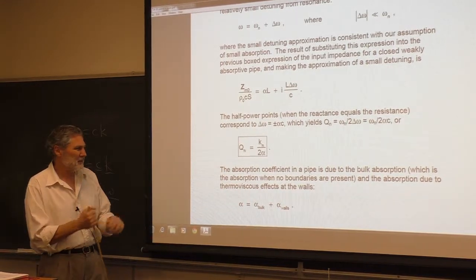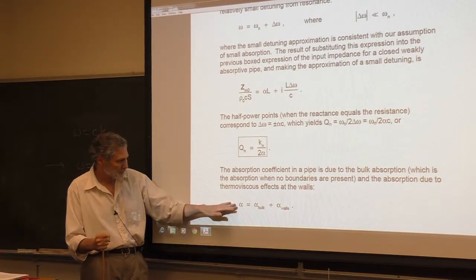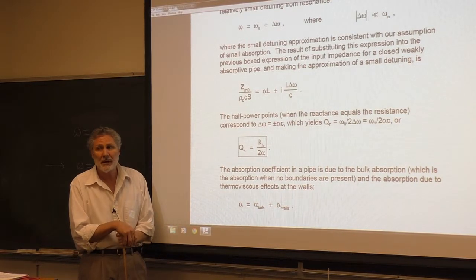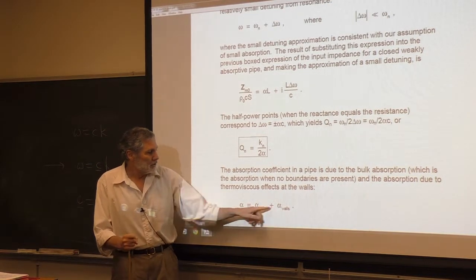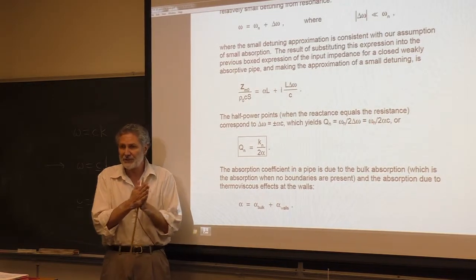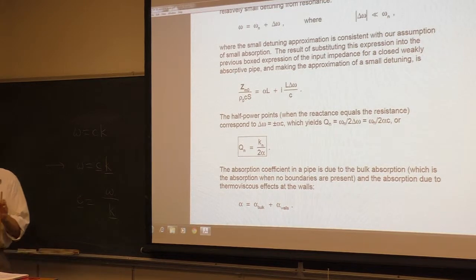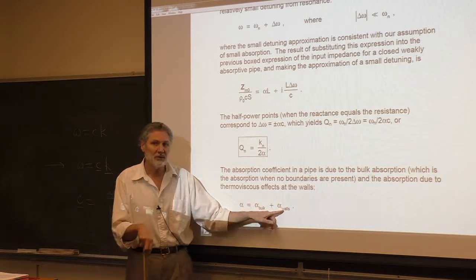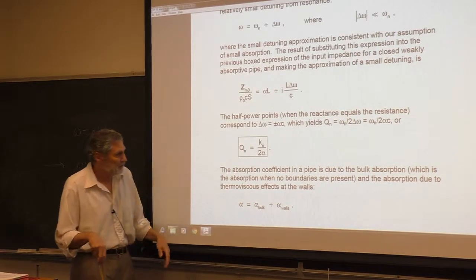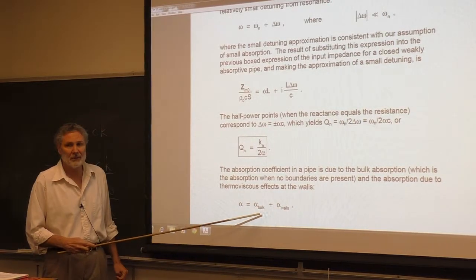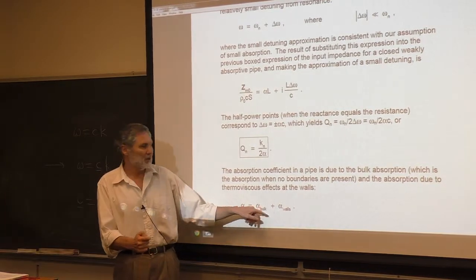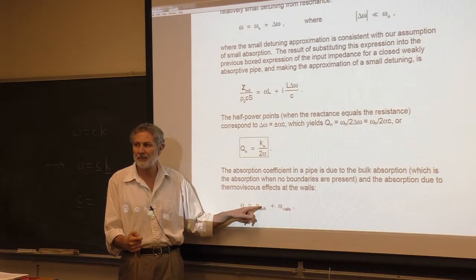For a pipe, you're going to have the usual bulk losses that we extensively studied, and you're also going to have wall losses due to viscous scrubbing and thermal conduction. Those occur in a boundary layer right near the wall of the pipe. We did not study those — they are in the book. Typically for a pipe, wall losses dominate. If the pipe has a really huge diameter, eventually bulk losses dominate, but for typical cases, wall losses overwhelm bulk losses.